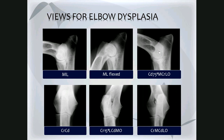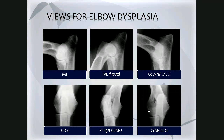The caudal 75 degrees medial cranial lateral oblique is also called the extended supinated medial lateral. This view nicely shows the cranial margin of the medial coronoid process. The cranial medial cordolateral oblique is opposite to the previous view and shows the lateral epicondyle better. This last view is less important for elbow dysplasia, but may be relevant for conditions where the condyles of the humerus have not fused.